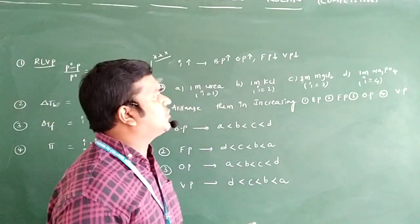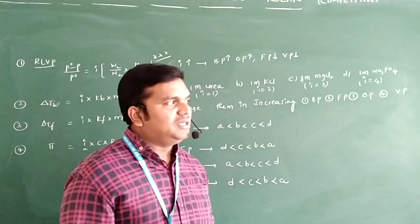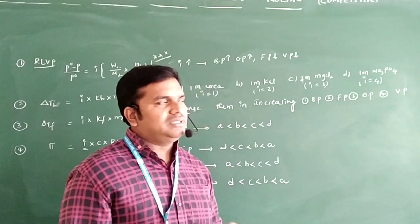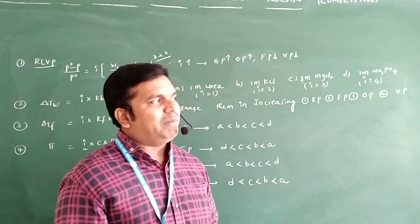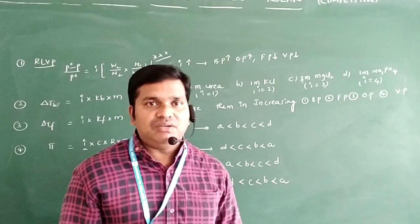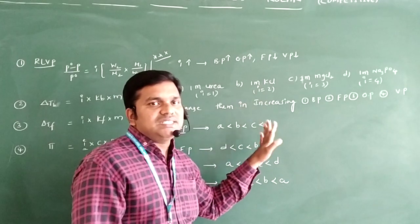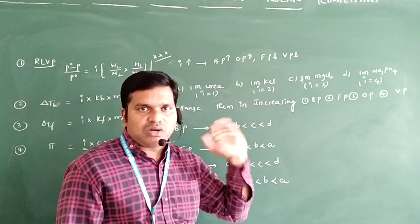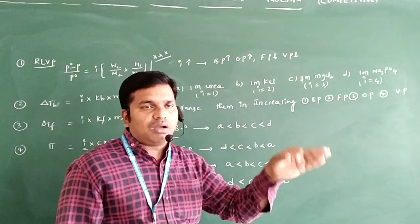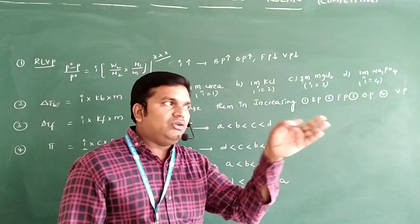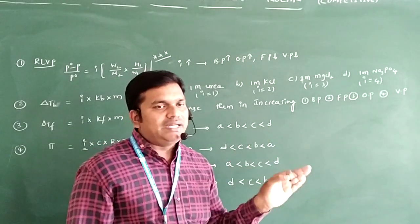This is the main concept. You can apply this to any type of question asking for increasing or decreasing order of boiling point, freezing point, osmotic pressure, or vapor pressure by comparing i values. If the concentrations are the same there is no problem, but if concentrations are different, multiply concentration by the van't Hoff factor i and then arrange them in increasing or decreasing order.